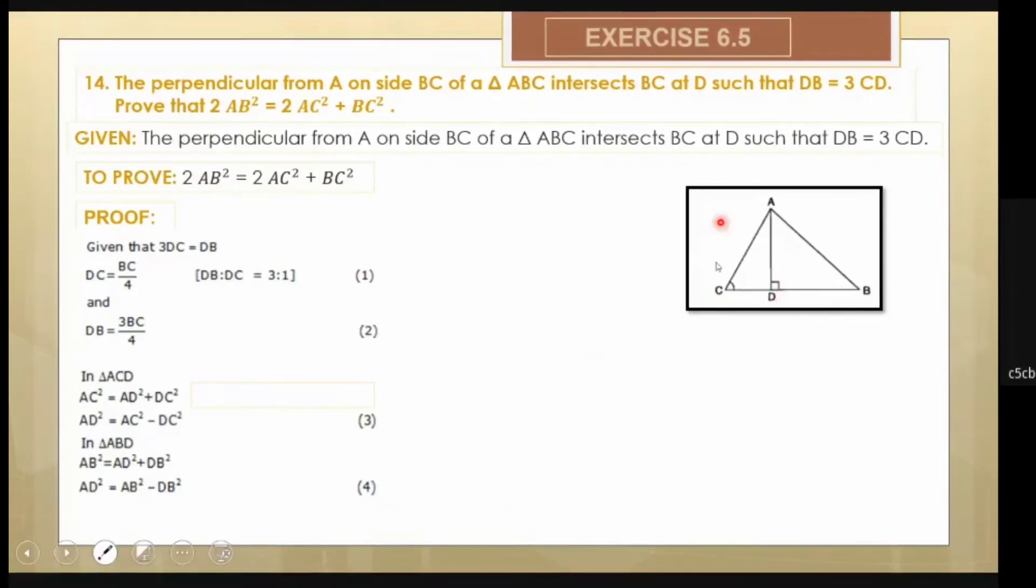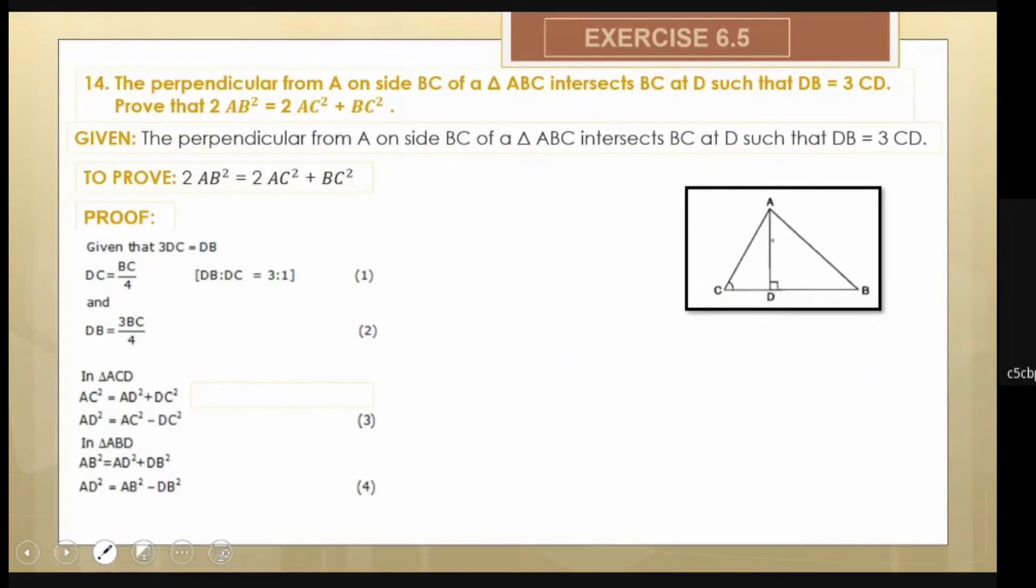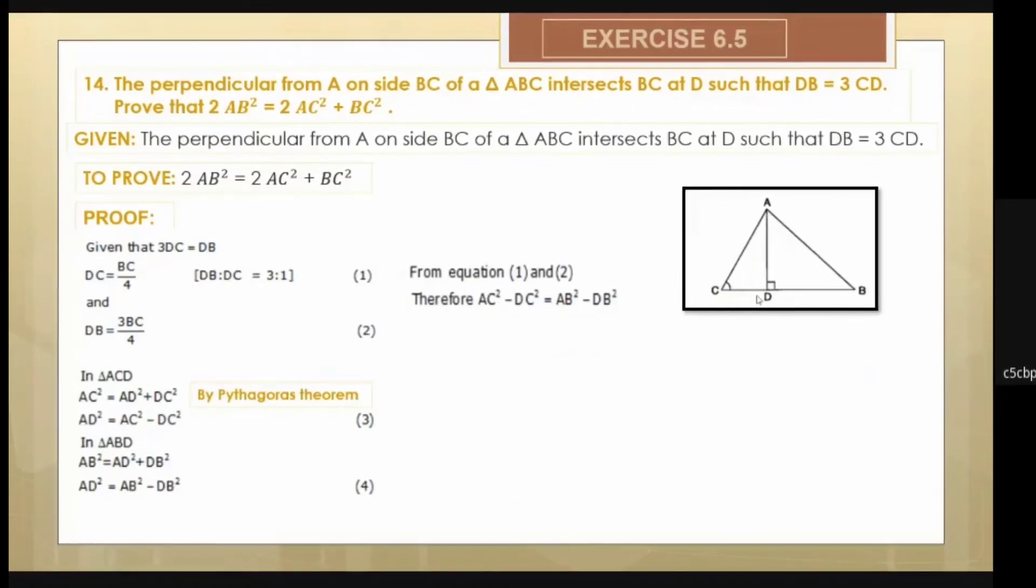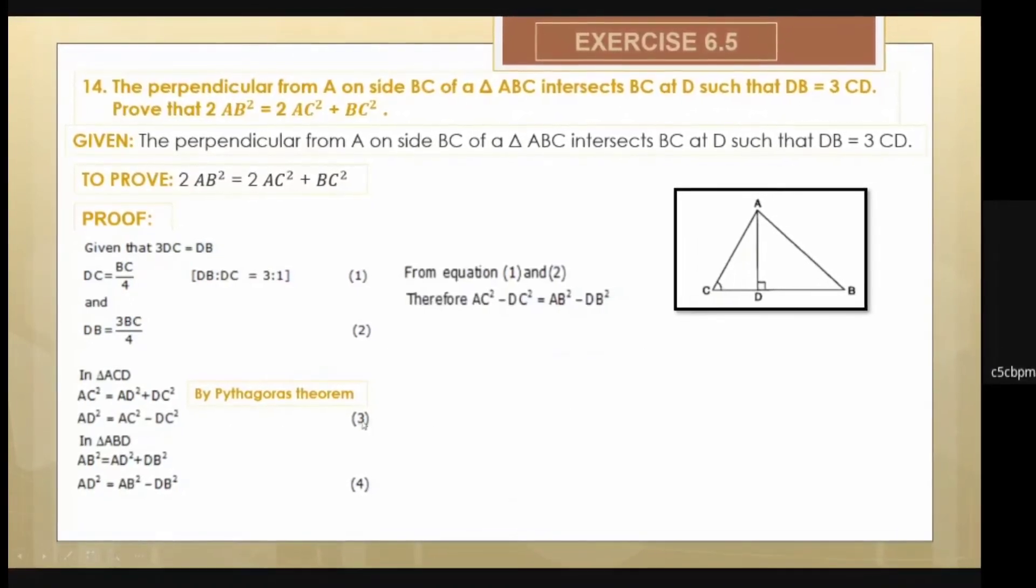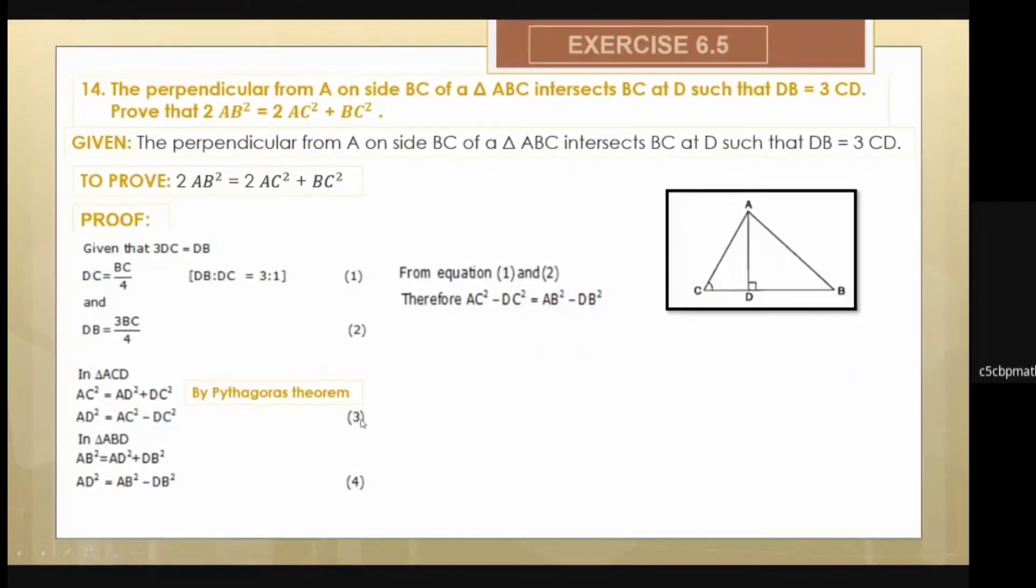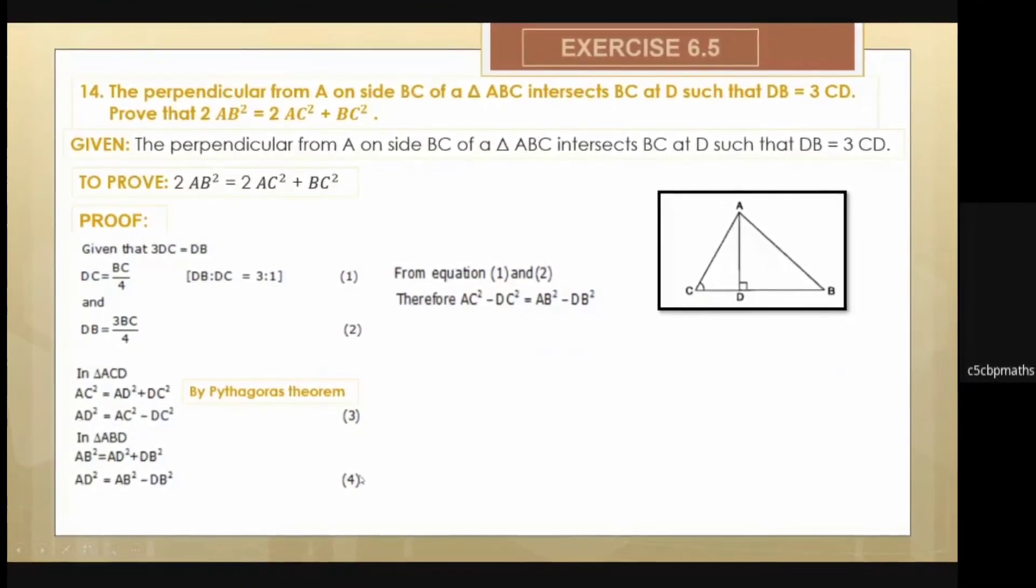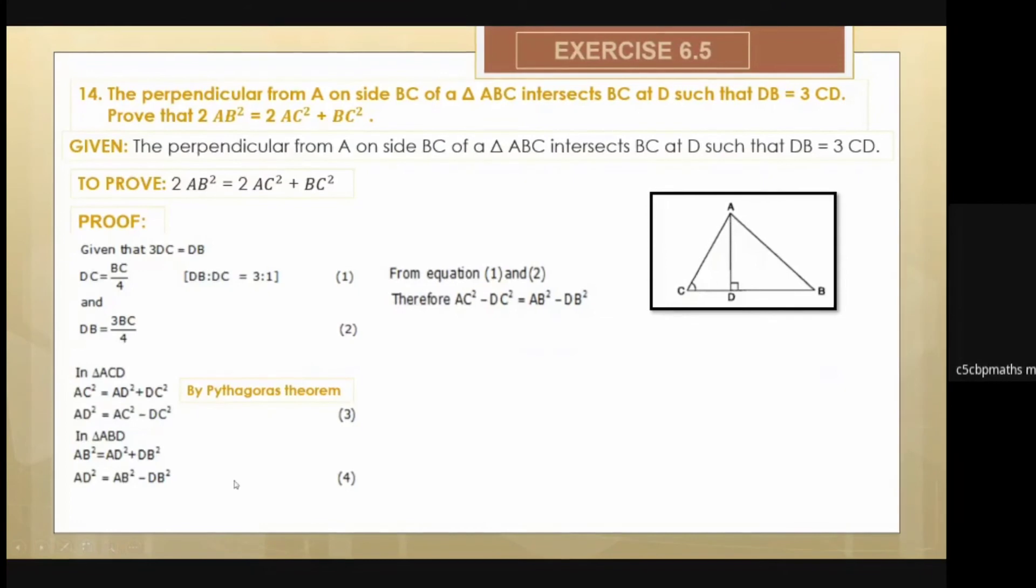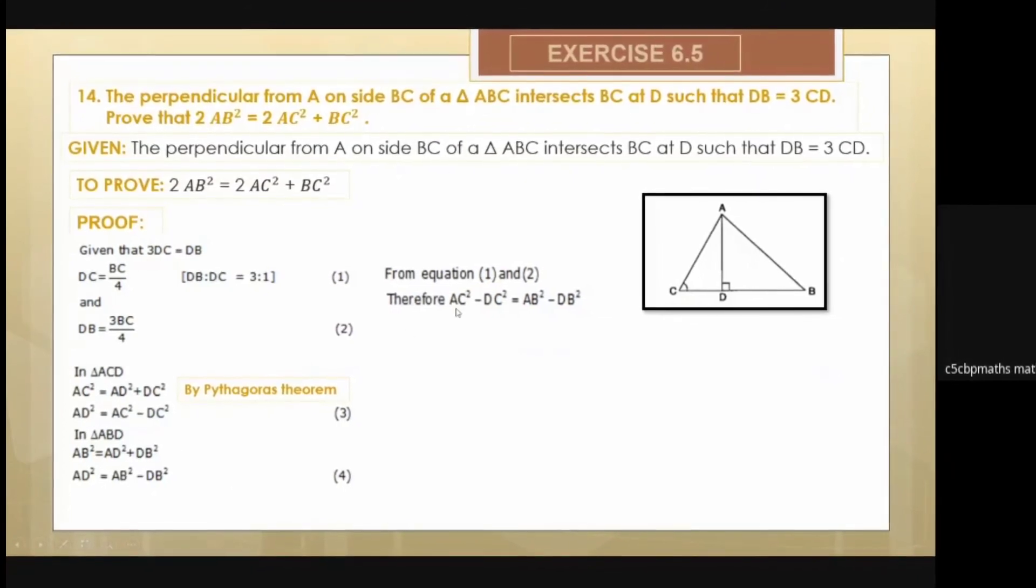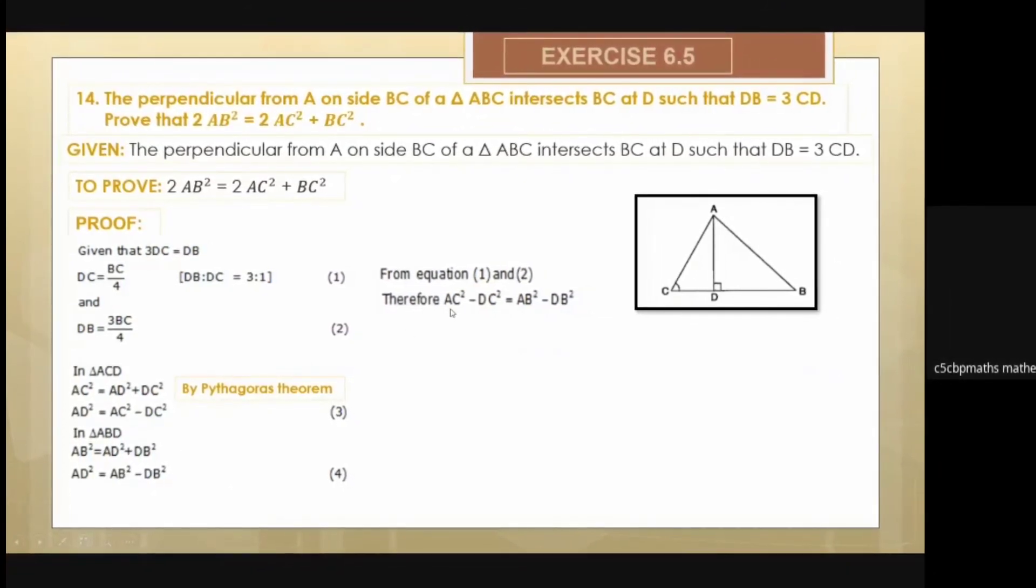Now I see triangle ADB, right angled at D, so I get that AD² will come out to be AB² - BD². From the third equation, AC² - CD² is also equal to AD², and from the fourth one, AB² - DB² is also equal to AD². I equate both of them.